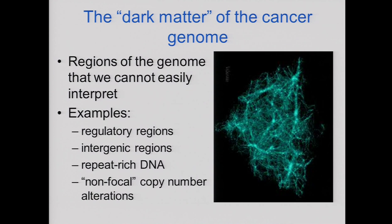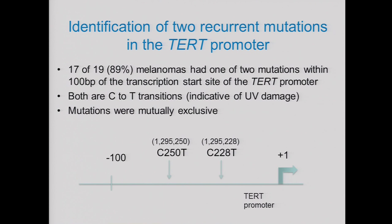Another area that caught our group largely by surprise was an insight into the dark matter of the cancer genome. Genomicists call dark matter regions of the genome that we cannot easily interpret — regulatory regions, intergenic regions, some repeat-rich DNA. We were studying melanoma, and we asked: are there any nucleotide substitutions that occur at the same nucleotide more than once? This is a statistically unlikely event, particularly in a non-genic or regulatory region. When we looked at the initial set of melanomas with sufficient coverage, 17 of 19 had one of two mutations just upstream of the transcriptional start site of the telomerase promoter.